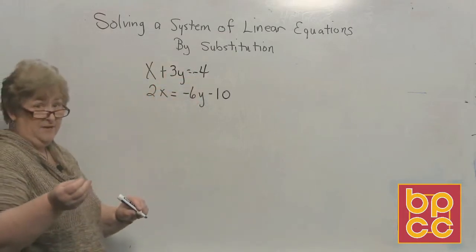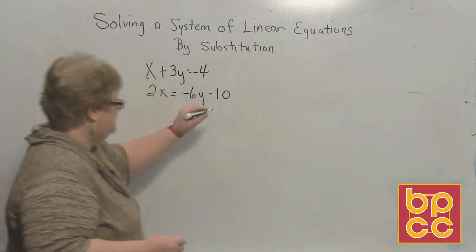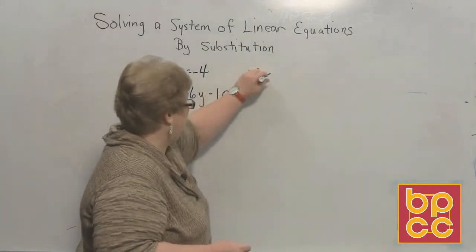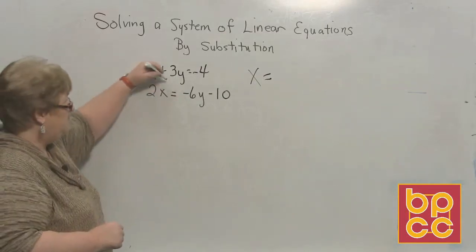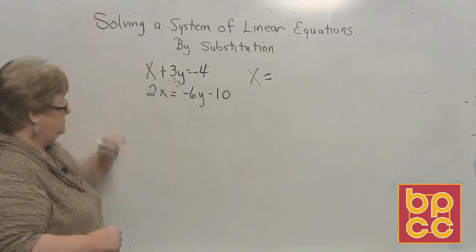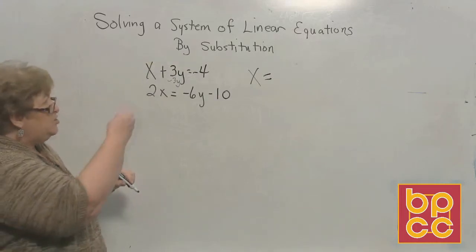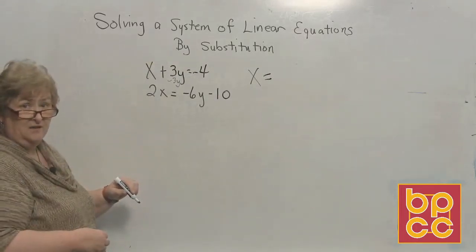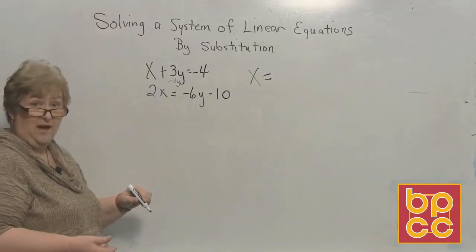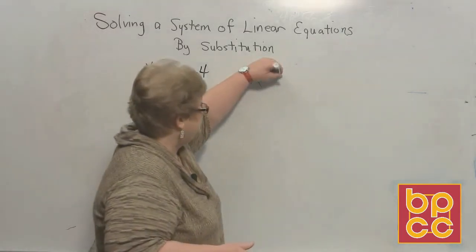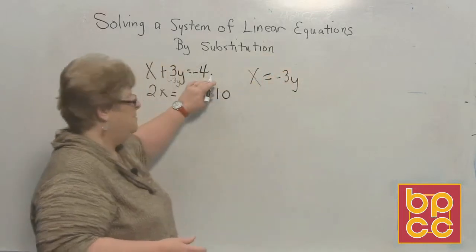And let's see what would happen in that case. If I tell the positive 3y to move to the other side, I'm in fact adding the opposite. So when he crosses over the equal sign, he will become the opposite, which in this case is a negative 3y. So I'm going to say x is equal to a negative 3y minus 4.